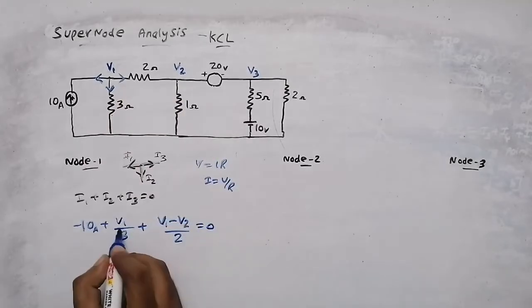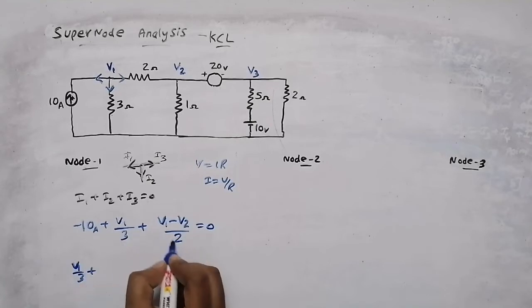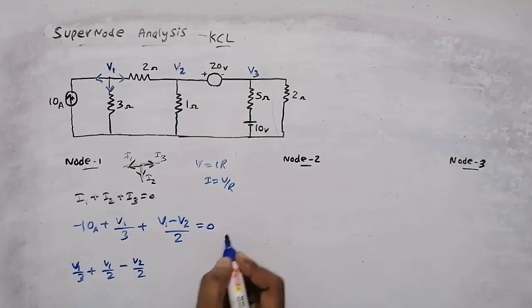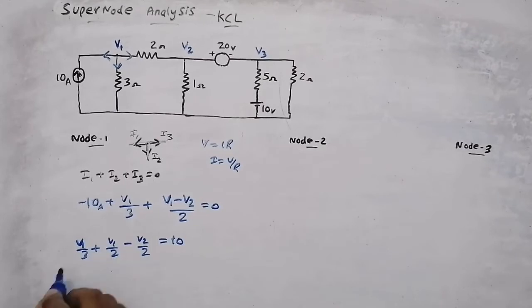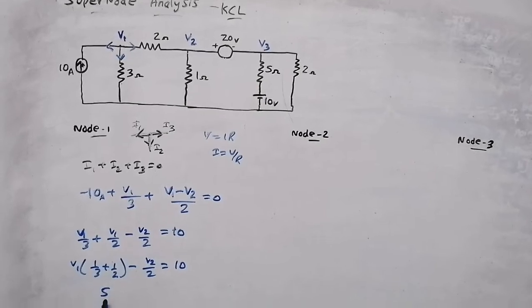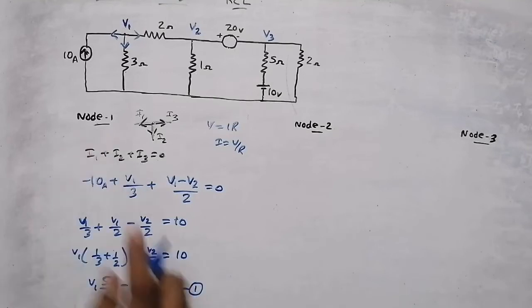Taking V1 terms together: V1/3 + V1/2 − V2/2 − 10 = 0. Moving −10 to the other side gives +10. Taking V1 outside: V1(1/3 + 1/2) − V2/2 = 10. Cross-multiplying gives 2 + 3 = 5 over 6, so V1(5/6) − V2/2 = 10. That is our first nodal equation.